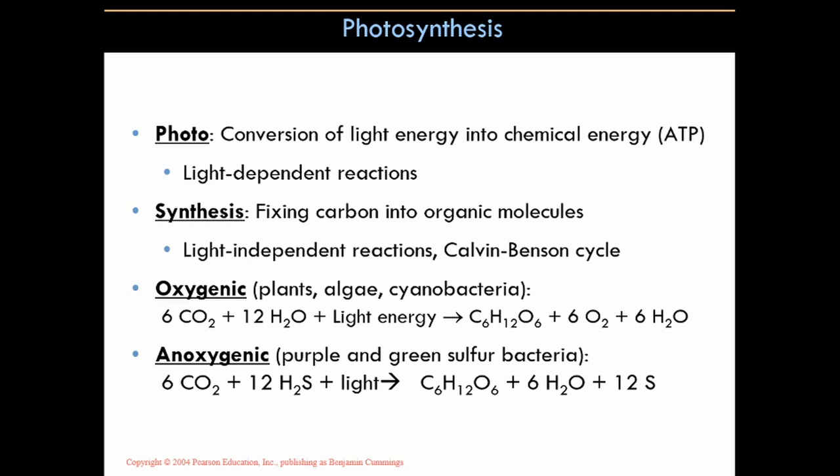There's oxygenic photosynthesis, where oxygen is a waste product. Carbon dioxide, water, and light energy yield glucose, oxygen, and water. The plant is after the glucose; nearly all the oxygen goes into the atmosphere, and the oxygen given off comes directly from the splitting of water. There is also anoxygenic photosynthesis, in which oxygen is not given off. In place of H2O, these organisms — purple and green sulfur bacteria — use H2S (hydrogen sulfide) as the electron donor, producing glucose, water, and sulfur.